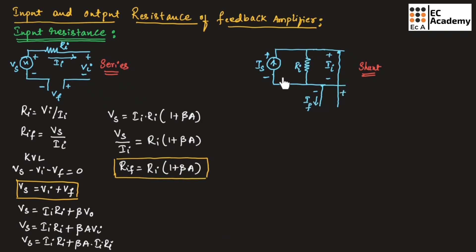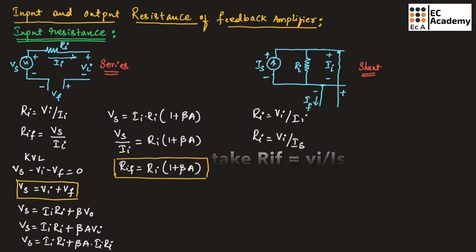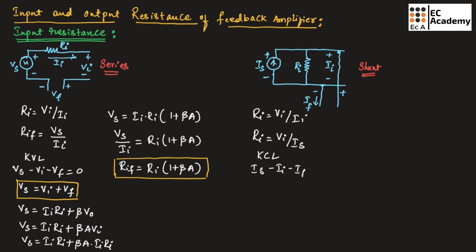Now let us consider the shunt type of connection across the input of a feedback amplifier. Here we can write Ri is equal to Vi divided by Ii. From the circuit, since Ii is equal to Is, we can write Ri is equal to Vi divided by Is. Applying KCL, we can write Is minus Ii minus Iif is equal to 0, so Is is equal to Ii plus Iif.